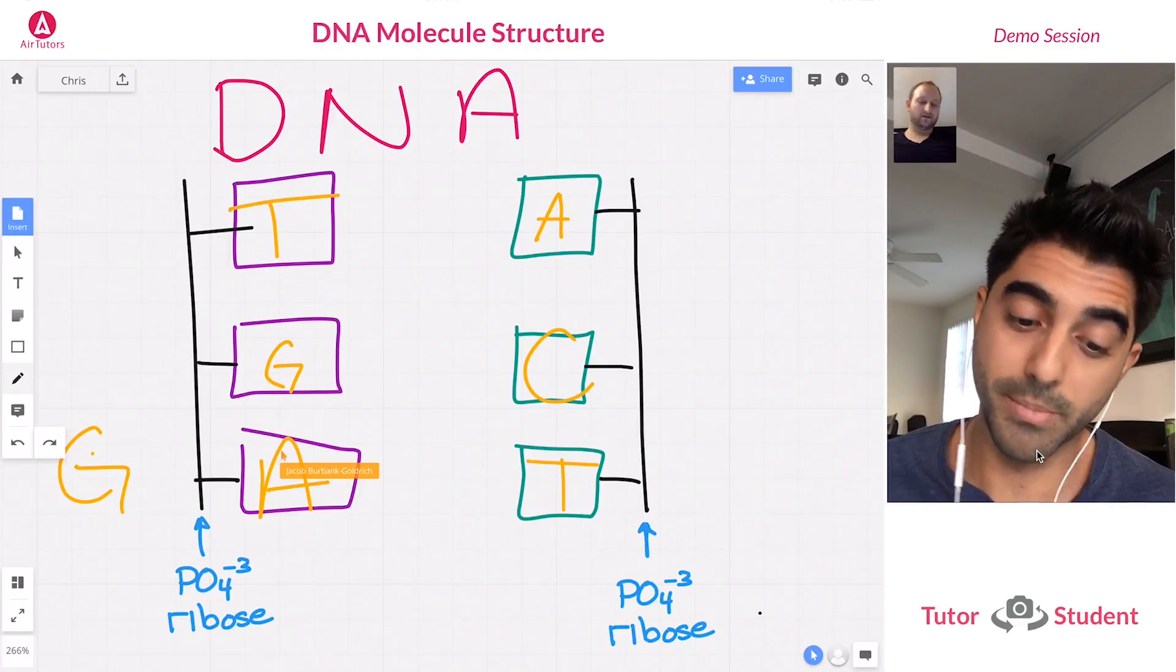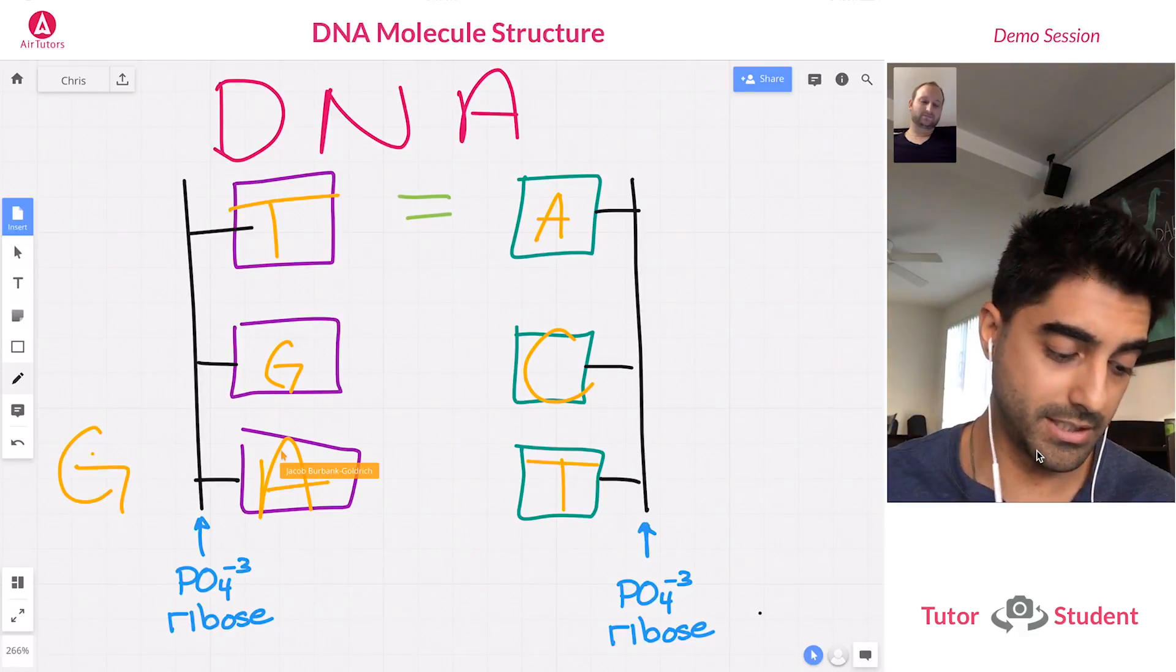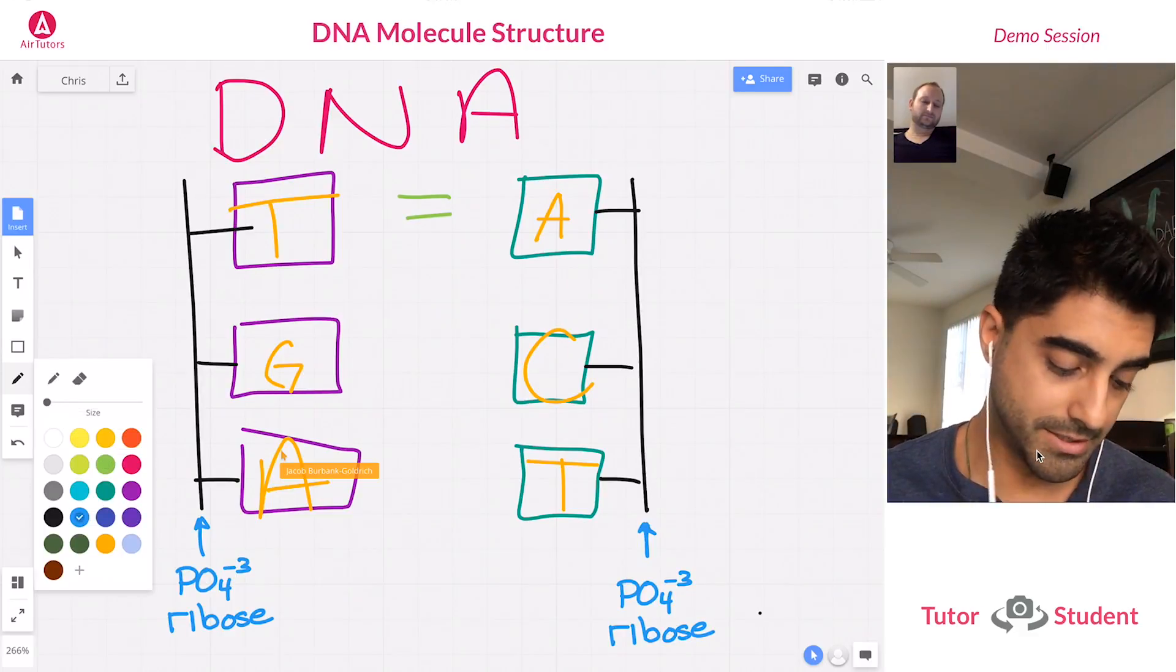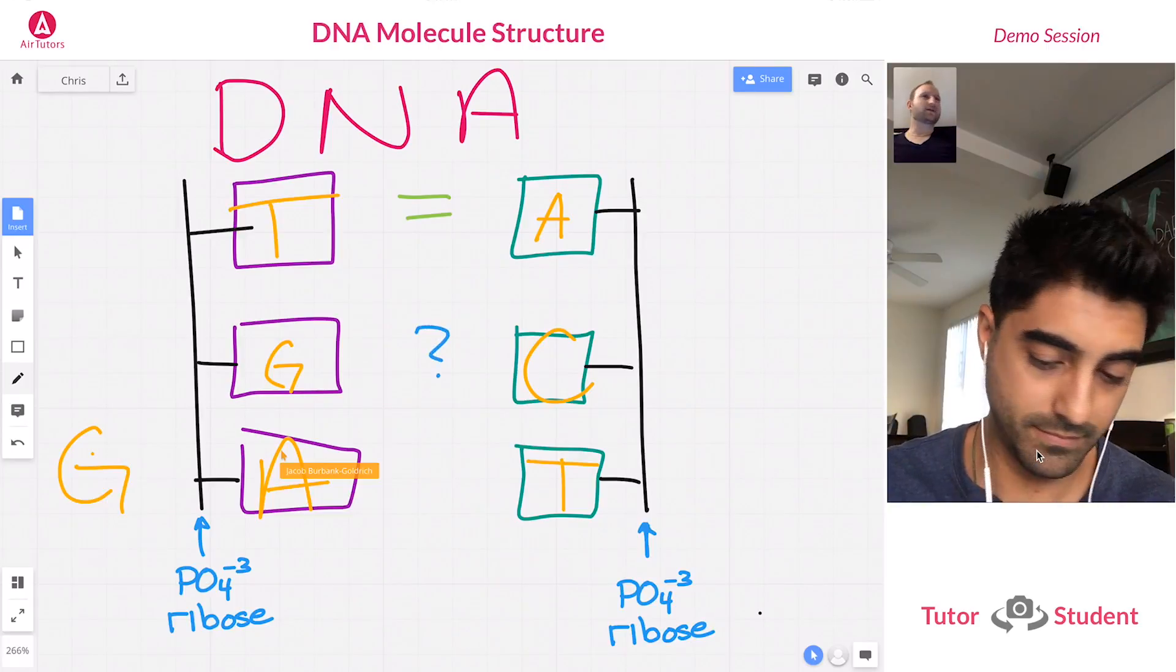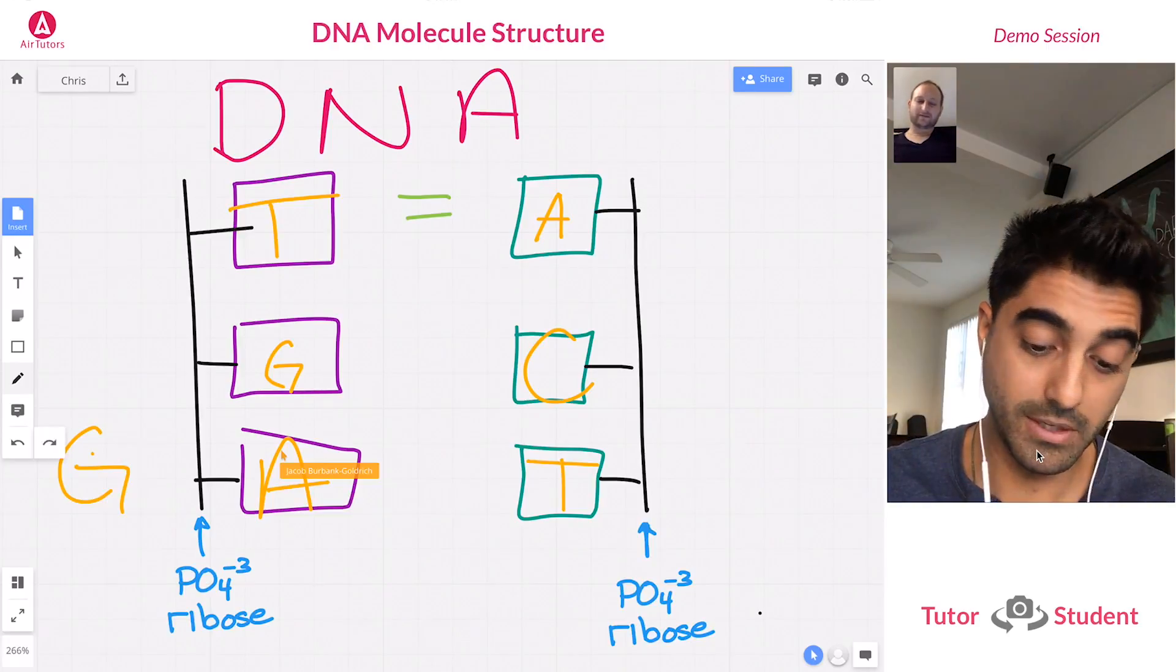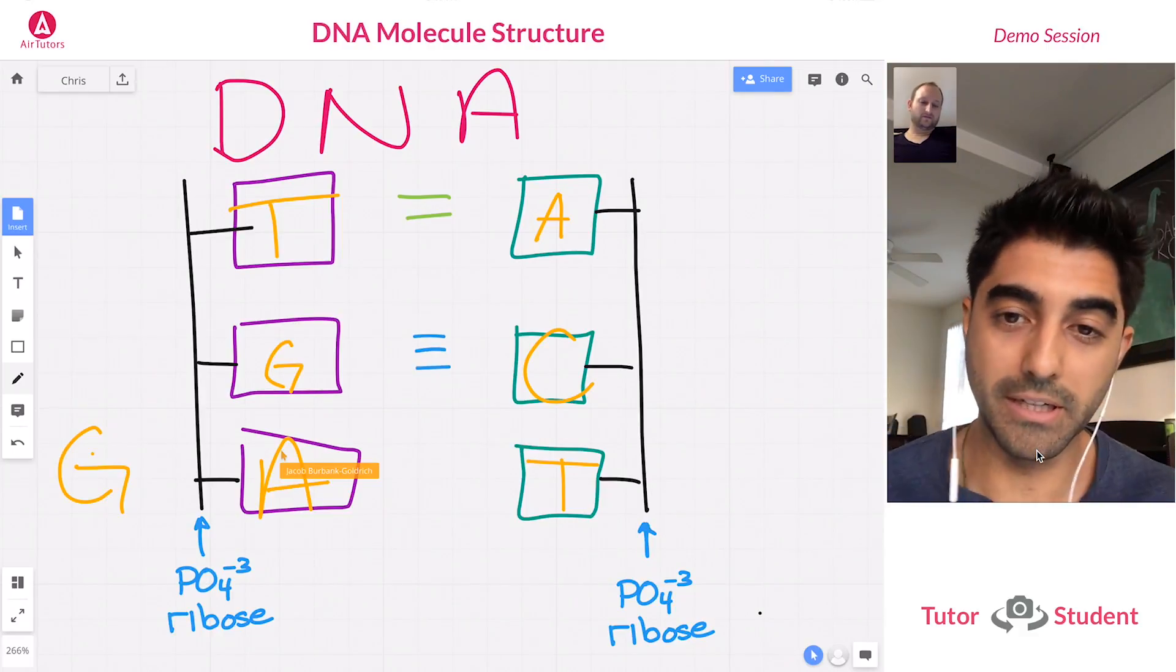Okay, hydrogen bond. So there's two hydrogen bonds between A and T. How many hydrogen bonds are there between G and C? I'm just gonna take a guess, I forgot this. One? Close. Three. Three, okay.